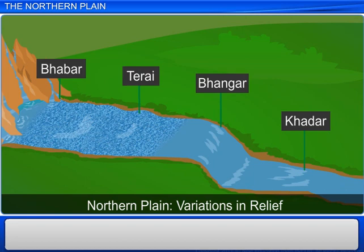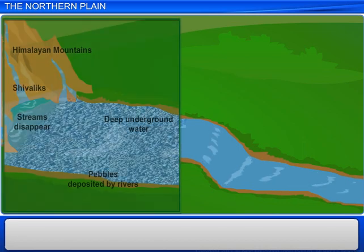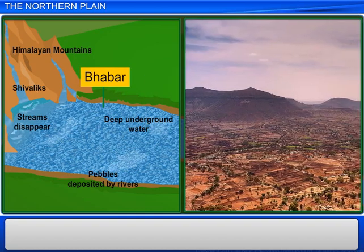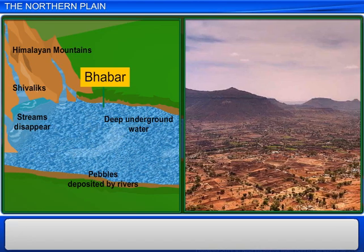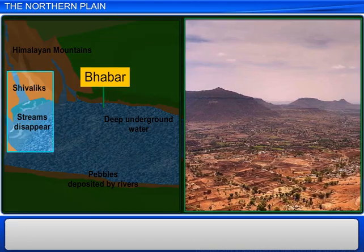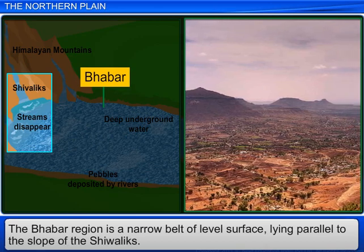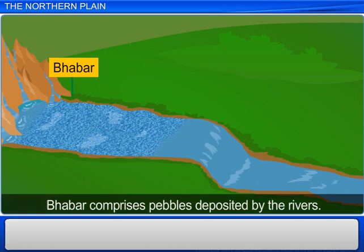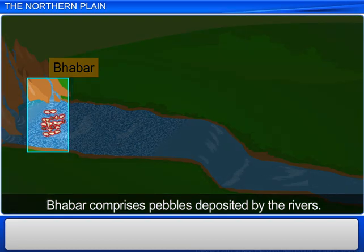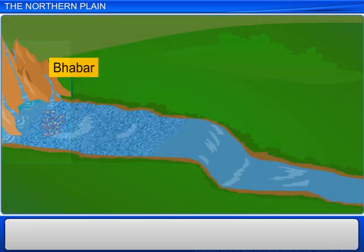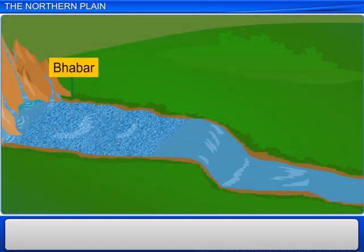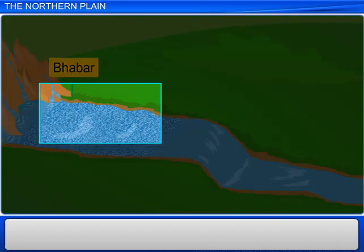The Bhabar region is a narrow belt of level surface in the northern plain, lying parallel to the slope of the Shivaliks. This region is about 8 to 16 kilometres wide and consists of pebbles deposited by the rivers after they flow down from the mountains. Interestingly, all the streams disappear in the Bhabar belt, and therefore the level of groundwater is very deep here.